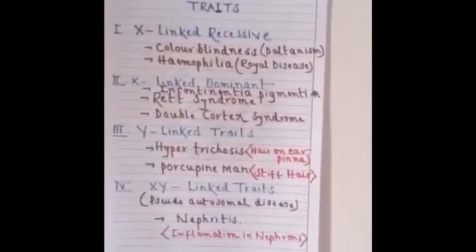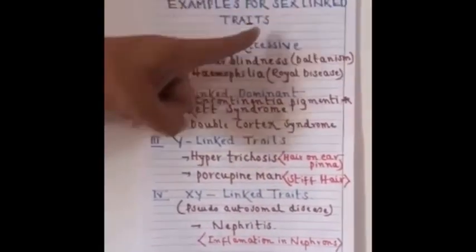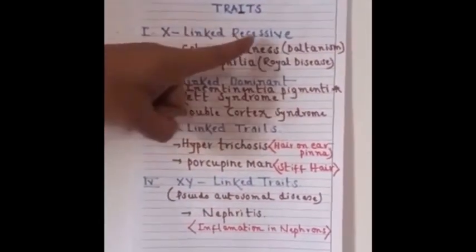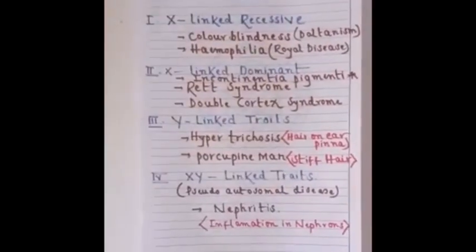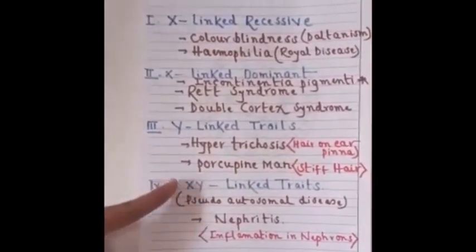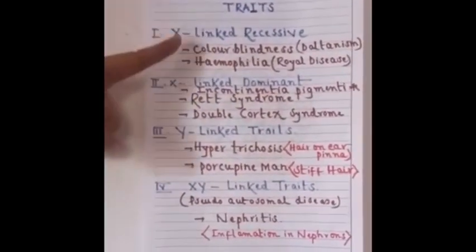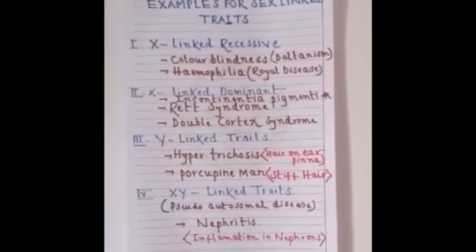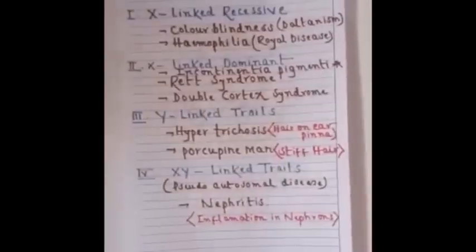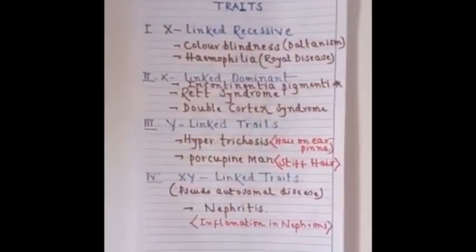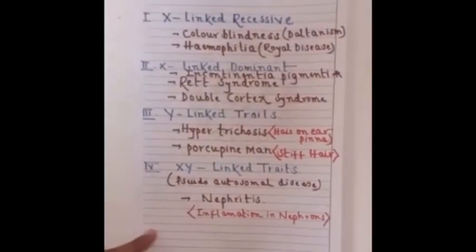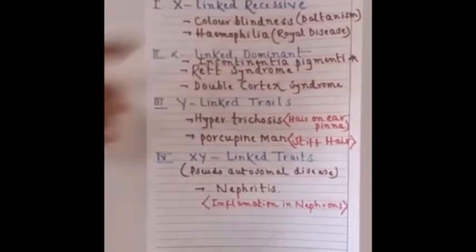The important examples for sex-linked traits are divided into: X-linked recessive traits, X-linked dominant traits, Y-linked traits, and XY-linked traits. All students should remember these examples because they are repeatedly asked in competitive exams — for example, hemophilia is an example for which type, hypertrichosis is an example for which type. Such questions are very frequently asked.